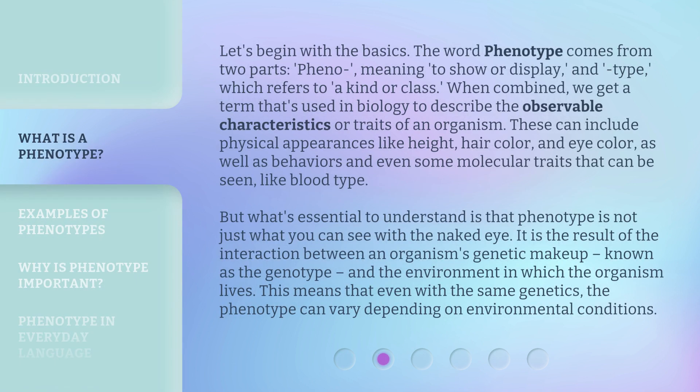Let's begin with the basics. The word phenotype comes from two parts: 'pheno,' meaning to show or display, and 'type,' which refers to a kind or class. When combined, we get a term that's used in biology to describe the observable characteristics or traits of an organism.